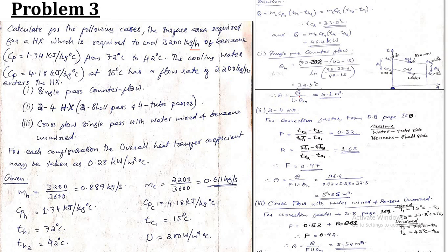For the single-pass counter flow heat exchanger, use q = U·θ_m·A. With q = 46.4 kW, U = 280 W/m²°C, and θ_m = 32.5°C, the surface area A = 5.1 m².